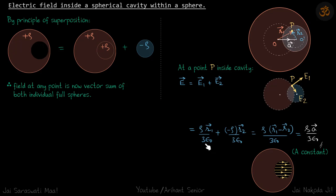Plus E₂, so r₂ will be there and instead of ρ, because it's a negatively charged sphere, we'll put -ρ. This simplifies to ρ/3ε₀ times (r₁ vector - r₂ vector).